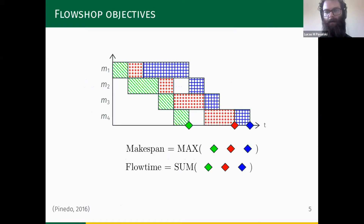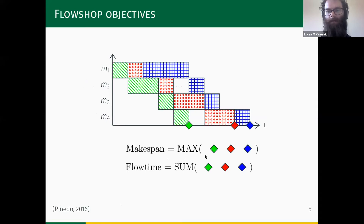Here is an example of a schedule. On the y-axis we have the set of machines — here four machines — and on the x-axis the time. Jobs are represented with different colors. Two common objectives are the makespan, which is the maximum completion time, and the sum of all completion times, represented as dots on the schedule.